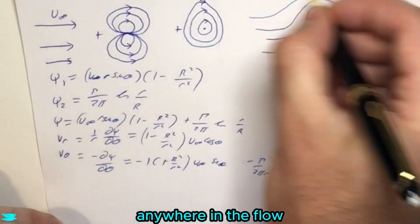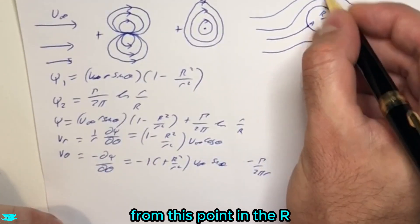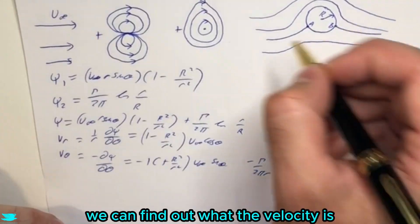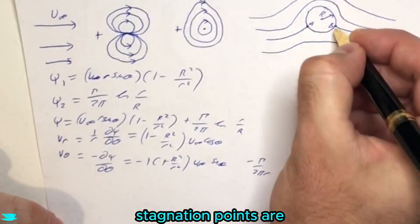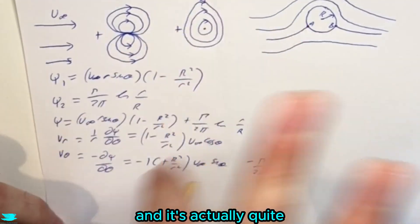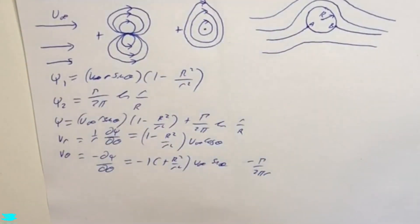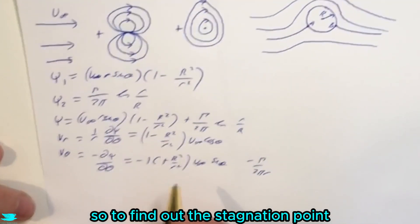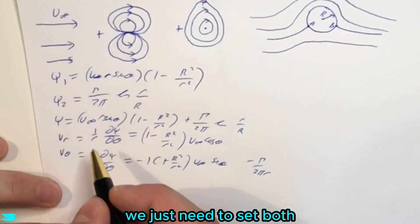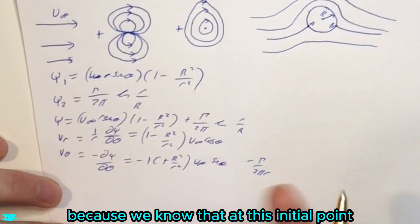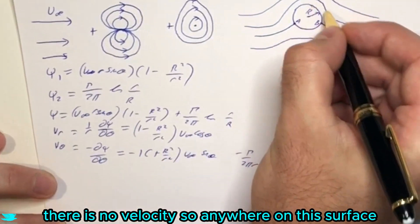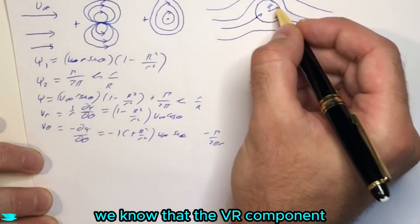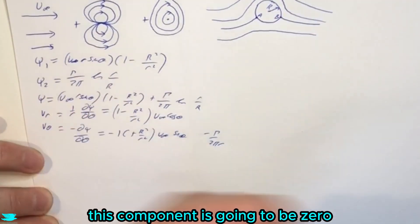So with these two equations, anywhere in the flow from this point in the r and the theta directions, we can find out what the velocity is. That's really powerful. Now let's find what these stagnation points are, because there are three different cases, and it's actually quite interesting what happens. So to find out the stagnation point, we just need to set both of these velocities to zero, because we know that at the stagnation point, there is no velocity.